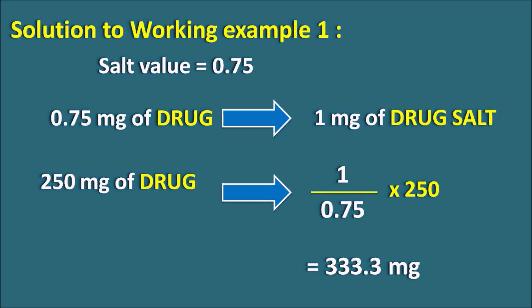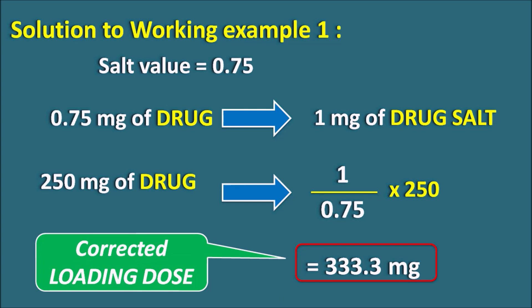The loading dose of the plain drug is 250 mg, but its sodium salt requires 333.3 mg — greater than the plain drug dose. This is because the salt cannot release 100% of the drug, so a higher dose is needed to produce the same plasma concentration. This 333.3 mg is the corrected loading dose of the drug salt.